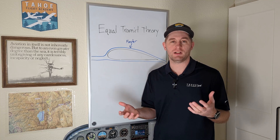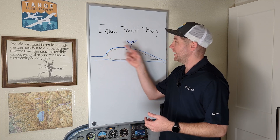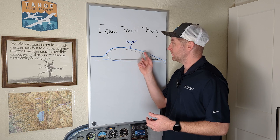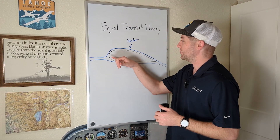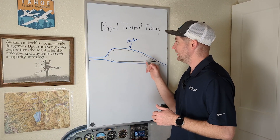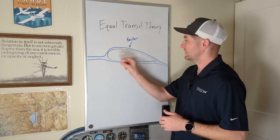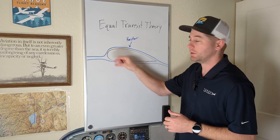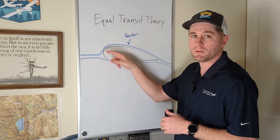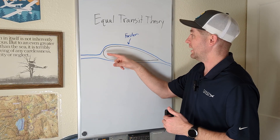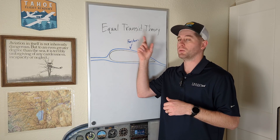One of the first things you learn when you're learning to fly is about the production of lift — that the air moving over the top of the wing accelerates compared to the air going underneath the wing. You've likely been told that the curved upper surface of the wing causes the air over the top to accelerate because these two air molecules have to meet at the trailing edge, and in order to do so, the air flowing over the top has to travel faster. This is dubbed the equal transit, or time, theory.